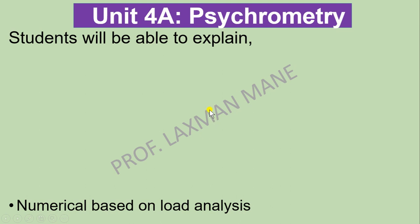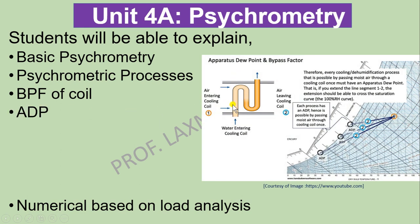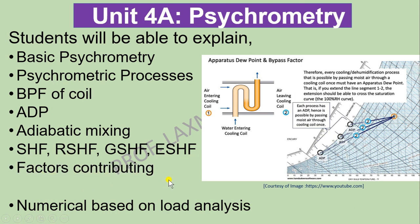Unit 4 is Psychrometry, which is the science of moist air. In this you will be able to explain basic psychrometry, psychrometric processes covering different air conditioning processes, bypass factor of the coil, ADP (Apparatus Dew Point temperature), and mixing of two air streams. For heat load calculation, the required factors include Sensible Heat Factor, Room Sensible Heat Factor, Grand Sensible Heat Factor, and Effective Sensible Heat Factor, along with factors contributing to cooling load and numericals based on load analysis.